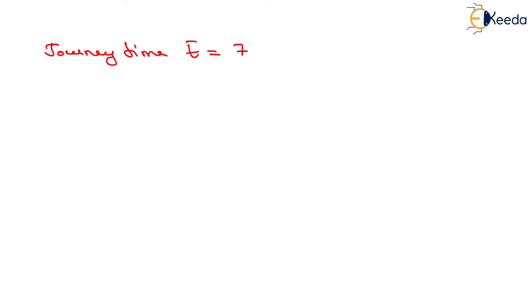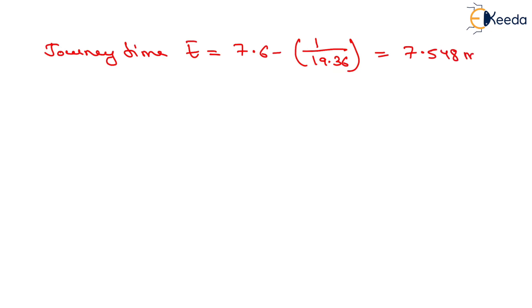Now we have to determine the value of journey time. Journey time T-bar will be equals to 7.6 minus NY upon Q, that is 1 upon 19.36, giving 7.548 minutes.